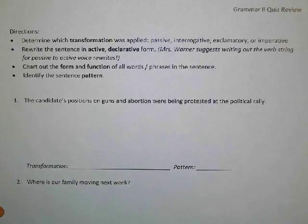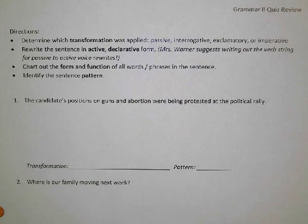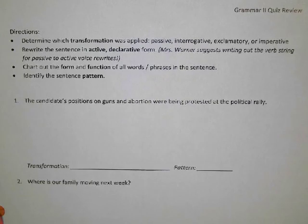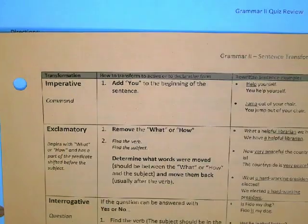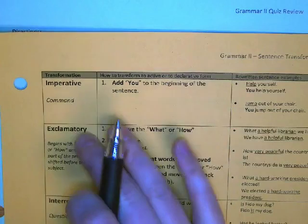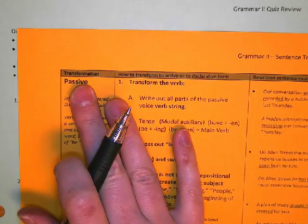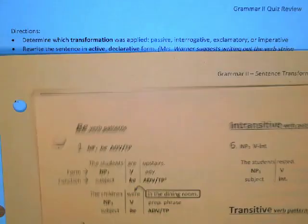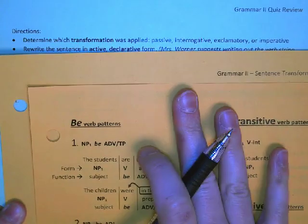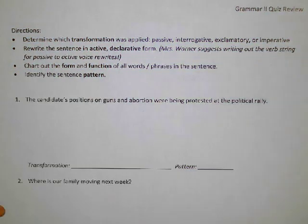This is the first part of the second grammar unit's quiz review. We're going to do the first four sentences on the front. In addition to your quiz review handout, you will want your unit two essential handout with the imperative, exclamatory, and interrogative to declarative form on the front, and passive voice to active voice on the back. And since we are also going to be charting these out, the unit one handout with all the sentence patterns, sentence analysis process, and prepositions will also be very useful.